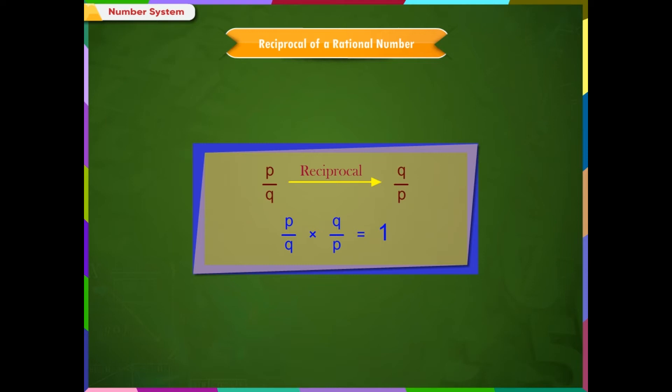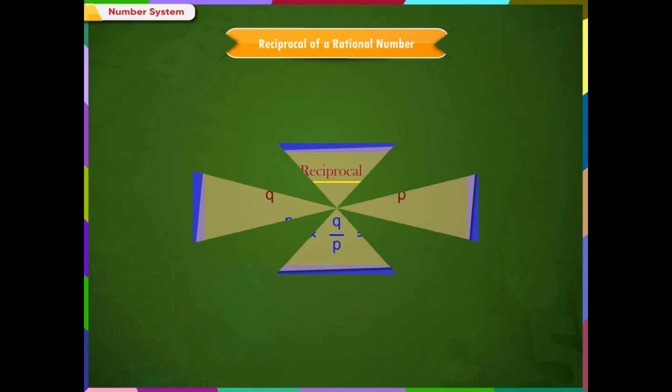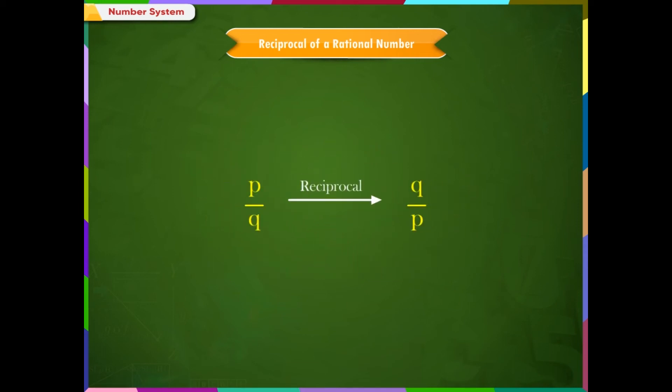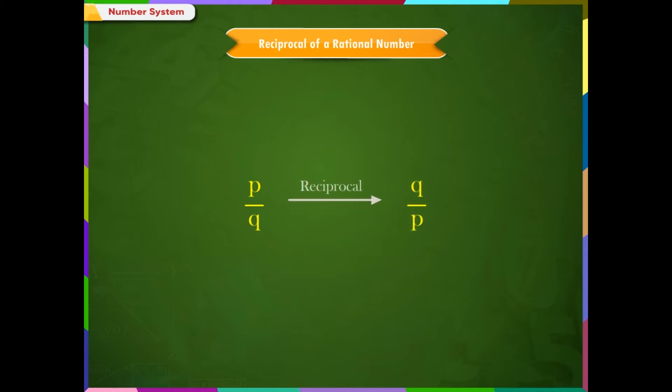The reciprocal of a rational number is also a rational number. Reciprocal of a rational number means interchanging of numerator and denominator.